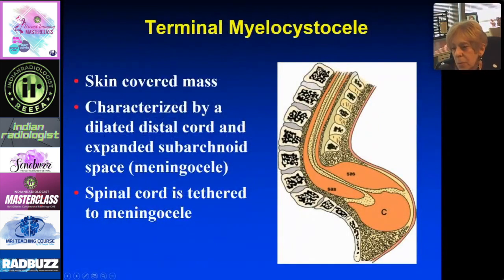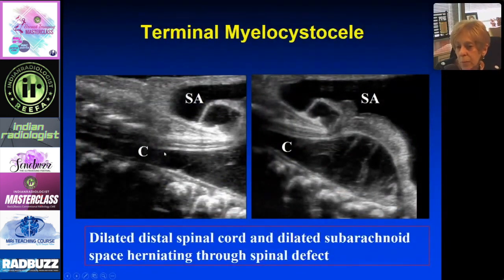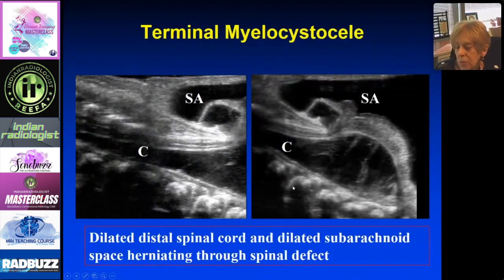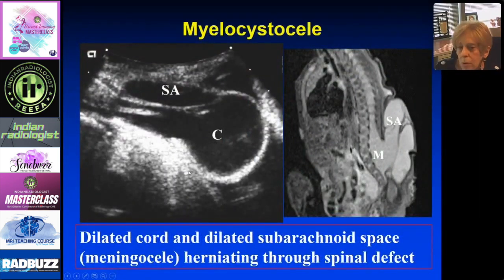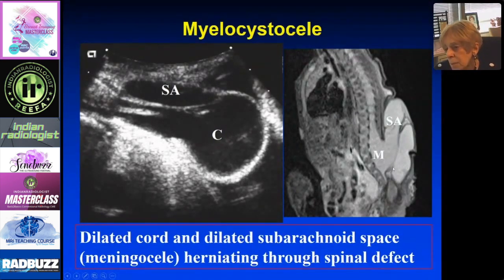The terminal myelocystocele is a complicated but skin-covered lesion characterized by a dilated cord that terminates as a huge cyst, surrounded by an expanded dilated subarachnoid space called a meningocele, with the spinal cord tethered. On ultrasound, you see a dilated cord extending way down to the sacrum with dilated subarachnoid space surrounding it. The myelocystocele is essentially a dilated cord, and you can see the cord being pulled down — tethered — with lots of surrounding subarachnoid fluid.